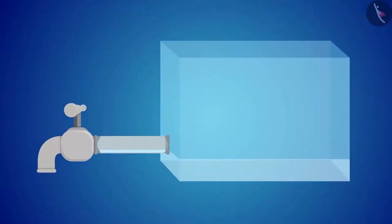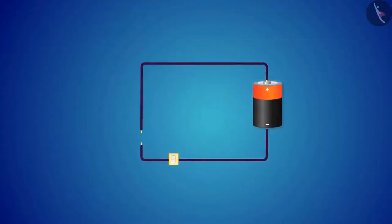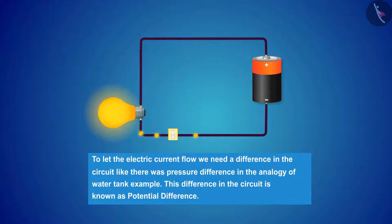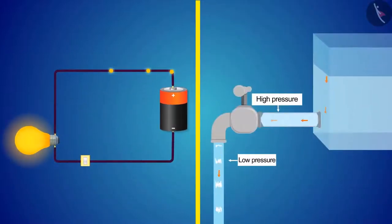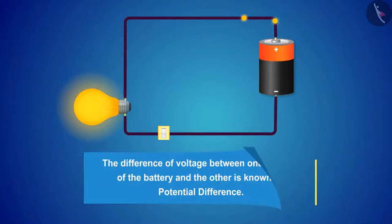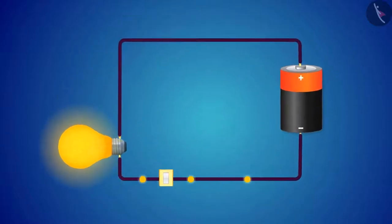If the water pipe is replaced by a metallic wire and the water tank is replaced by a battery, we get something like this. The circuit must be closed for the current to flow. Electricity is also like the water tank example — to let the electric current flow, we need a difference in the circuit, just like there was a pressure difference in the water tank analogy. This difference in the circuit is known as potential difference. Just as water flows from high pressure to low pressure, similarly electric current also moves from high potential area to low potential area. The difference of voltage between one terminal of the battery and the other terminal is called potential difference.